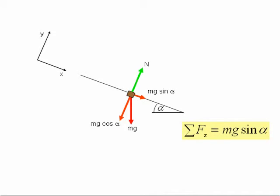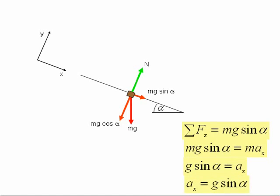We now put that resultant force into Newton's second law equation, which gives us Mg sin alpha equals M times ax, where ax is the acceleration down the slope. Canceling both sides by M gives us finally ax equals g sin alpha.